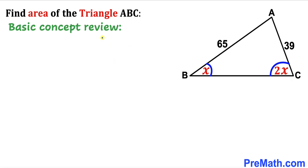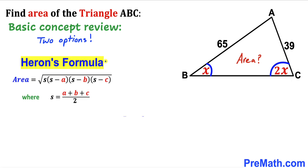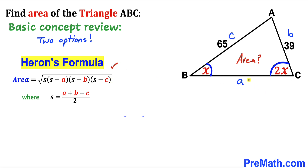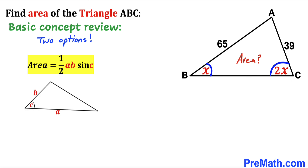Before we proceed, let me go over the basic concepts. We have two options to calculate the area of this triangle. Our first option is Heron's formula: area equals the square root of s times (s minus a) times (s minus b) times (s minus c), where s is the semi-perimeter (a plus b plus c) divided by 2. This is feasible if we can find side length a using the law of sines.